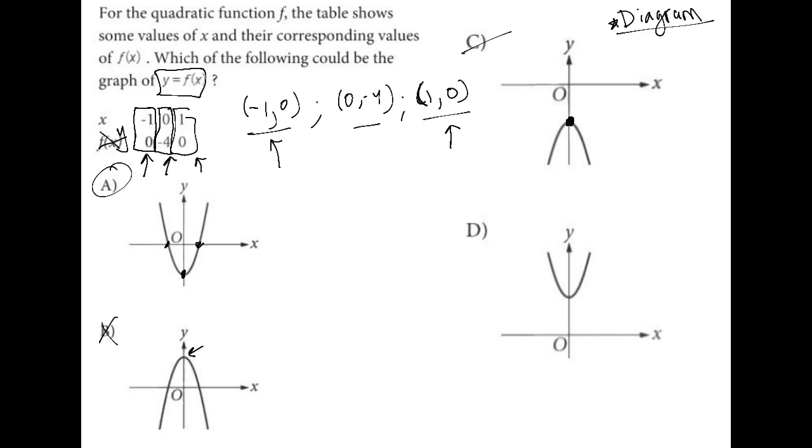And the same thing for choice D. It also does not have any x intercepts. So it's also out. And that is the reason why choice A is the best answer.